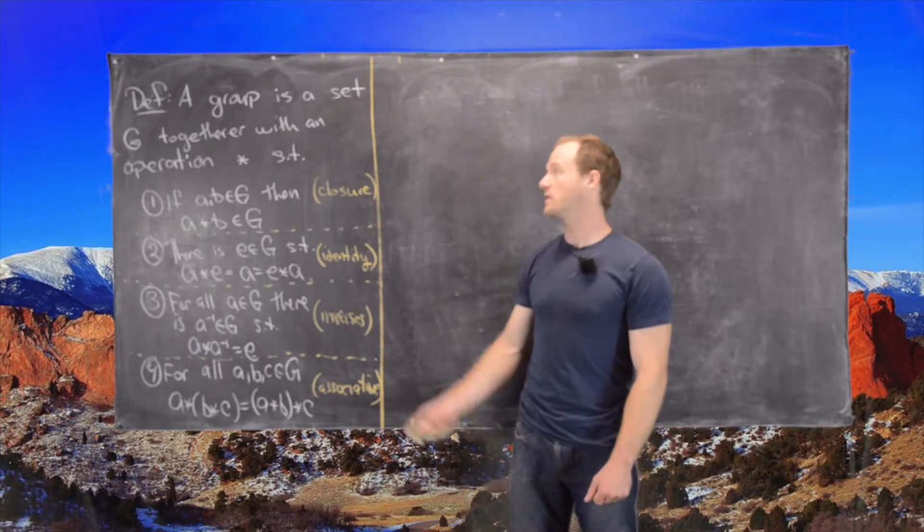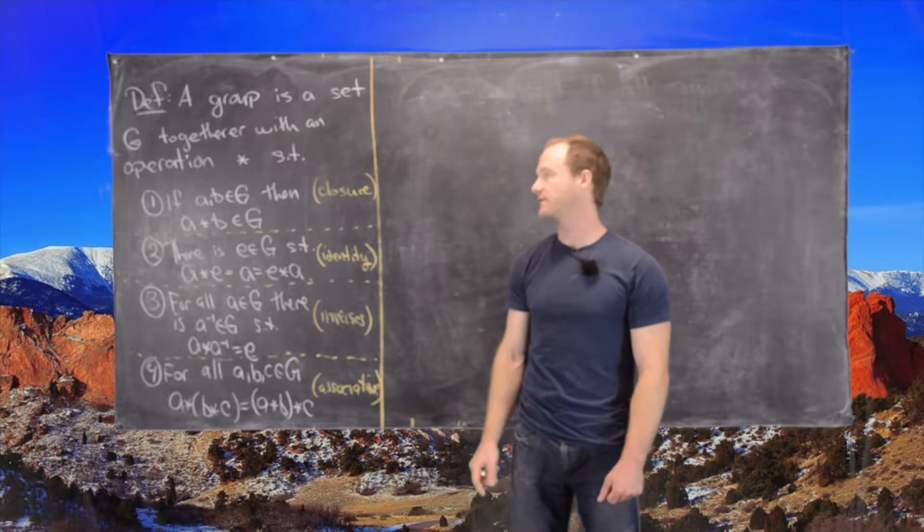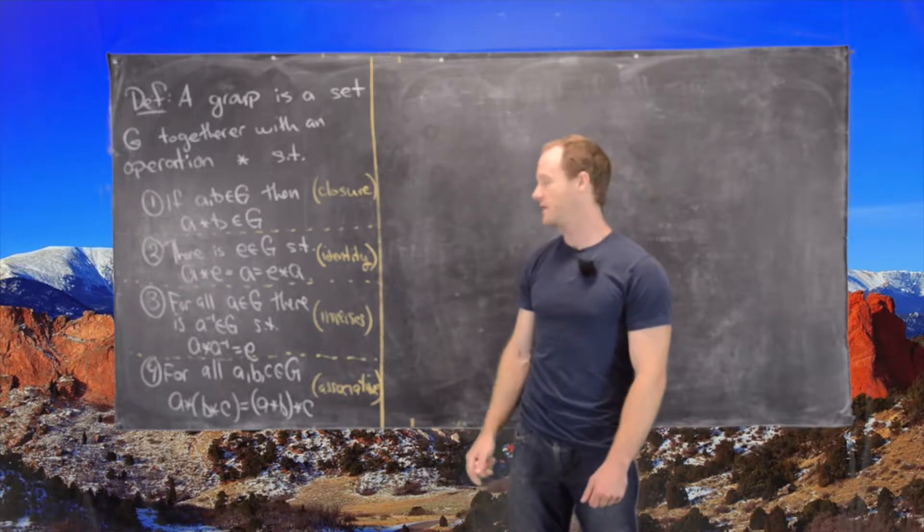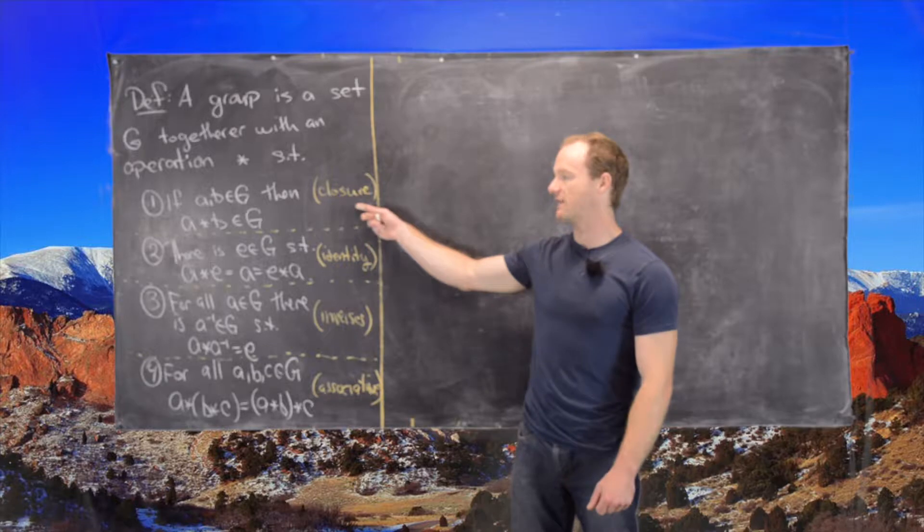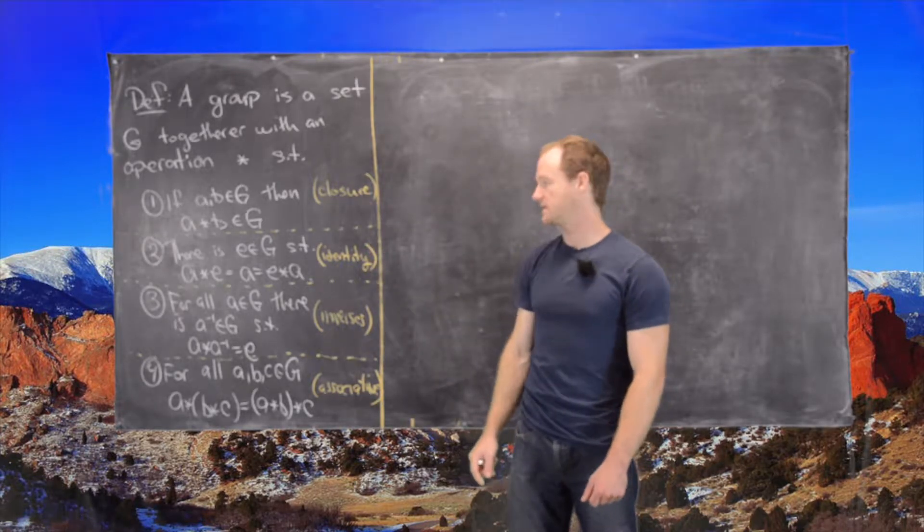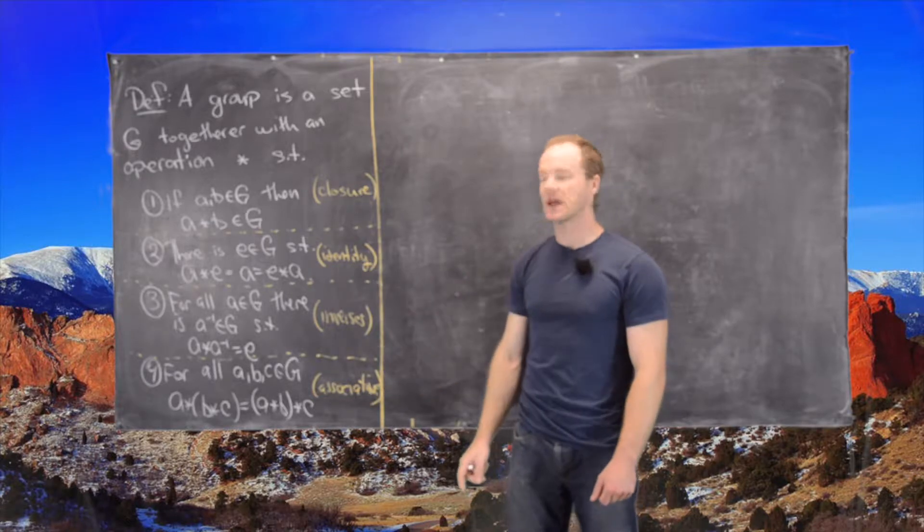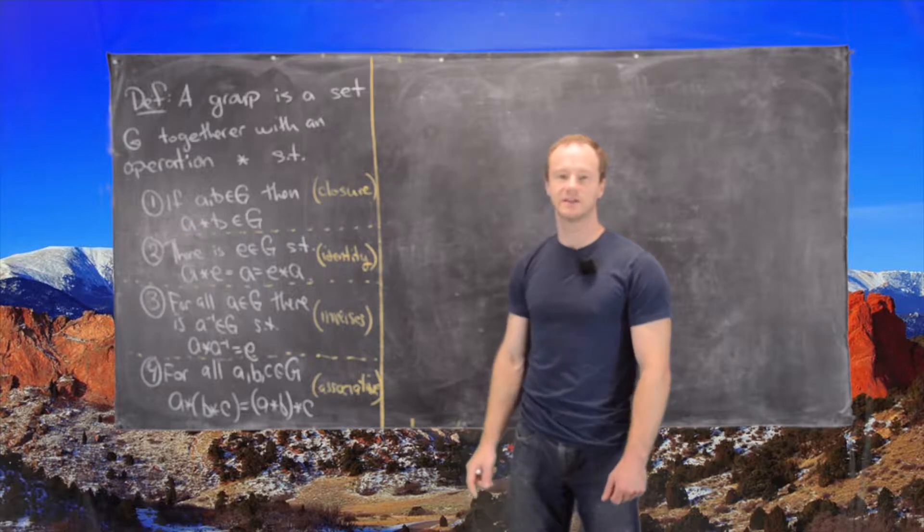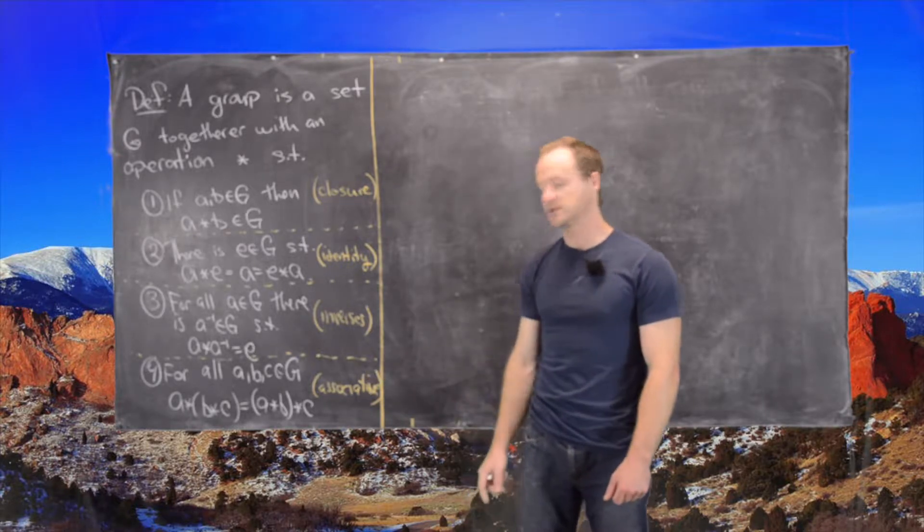In a previous video we looked at the definition of a group which I've left on the board. It's a set together with a binary operation with these four axioms: closure, so if we multiply two elements from the set we end up with an element in the set; an identity element in the set; inverses for every element in the set; and associativity.